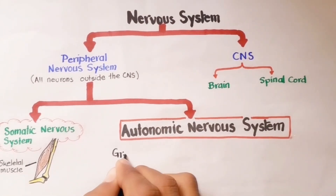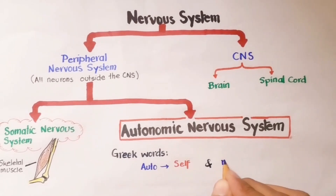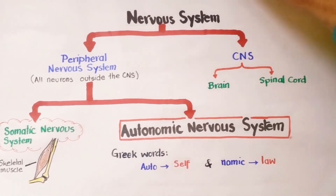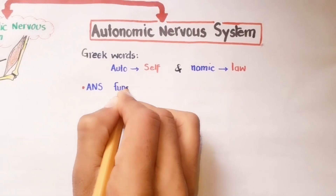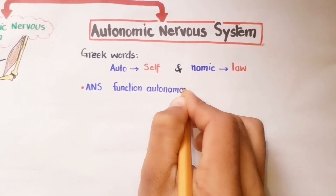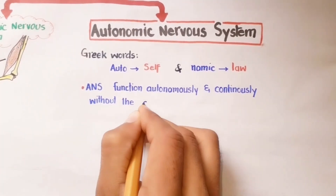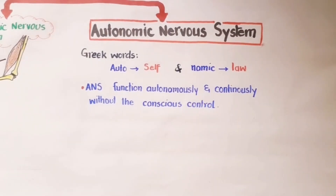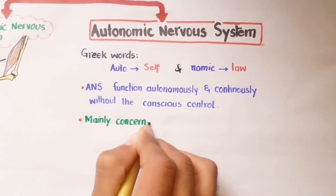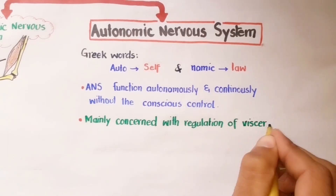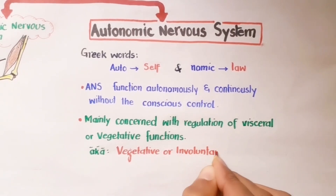The word autonomic is derived from two Greek words: 'auto' means self and 'nomic' means law. So the autonomic nervous system is part of the peripheral nervous system that functions autonomously — meaning independently and continuously — without conscious control. We don't have control over it. The autonomic nervous system is mainly concerned with regulation of visceral or vegetative functions of the body, so it is also called the vegetative or involuntary nervous system.